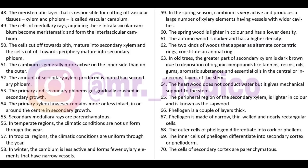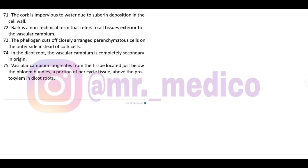Phellogen (cork cambium) is a couple of layers thick, made up of narrow, thin-walled, nearly rectangular cells. Outer cells of phellogen differentiate into cork (phellem), which is non-living. Inner cells differentiate into secondary cortex (phelloderm), which is parenchymatous and living. Cork is impervious to water due to suberin deposition. Bark is a non-technical term referring to all tissues exterior to the vascular cambium, including both living and dead tissues.